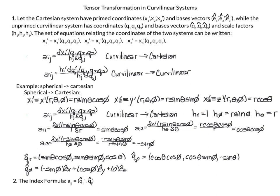We also have this matrix to go from a curved linear system to another curved linear system — not the other way, but for example from spherical to cylindrical. The difference is we now have two curved linear systems, so we need to put the scale factor for the primed curved linear system on top and the unprimed system on the bottom. We will do the example of spherical to Cartesian two ways: one using this formula, and two using the index formula.